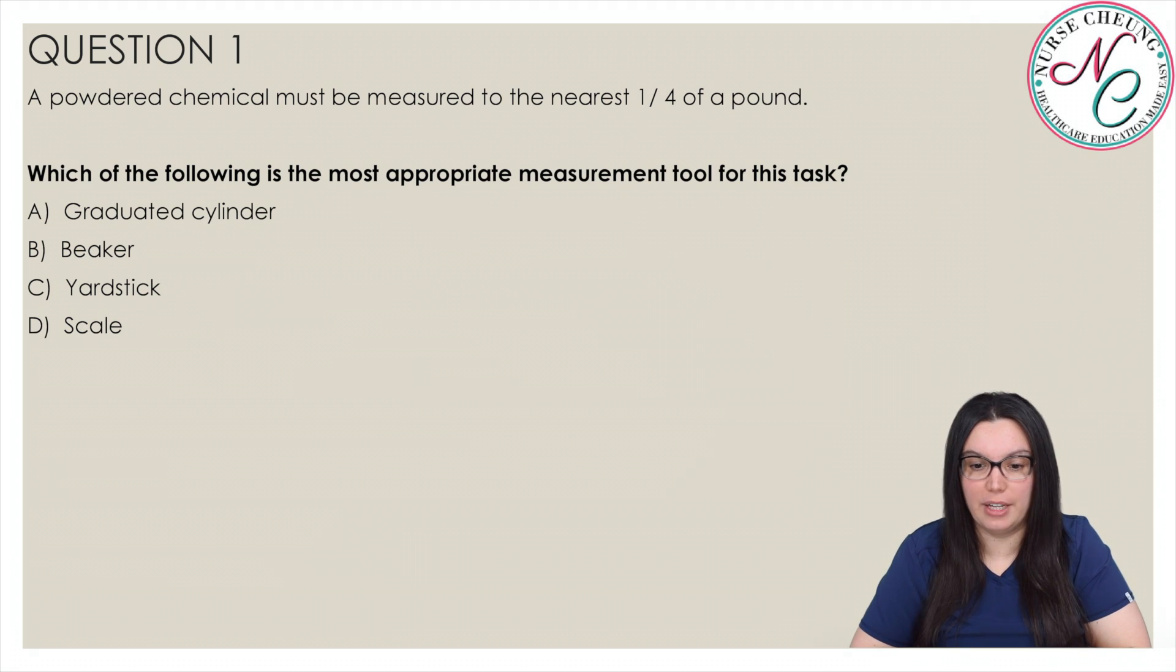Question 1. A powdered chemical must be measured to the nearest one-fourth of a pound. Which of the following is the most appropriate measurement tool for this task? Is it A, graduated cylinder, B, beaker, C, yardstick, or D, scale?